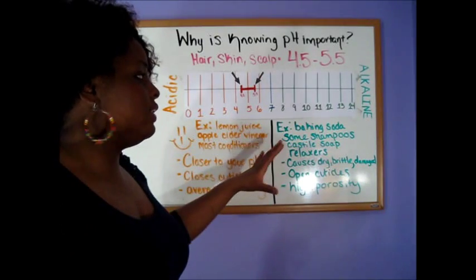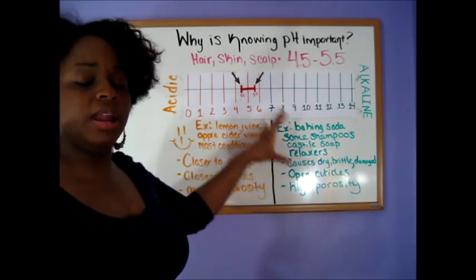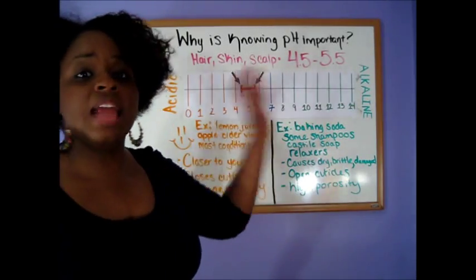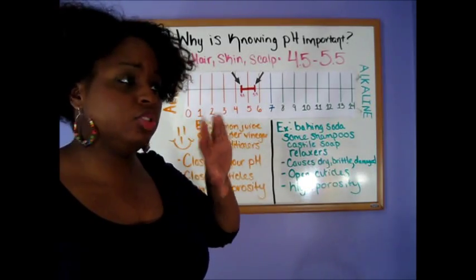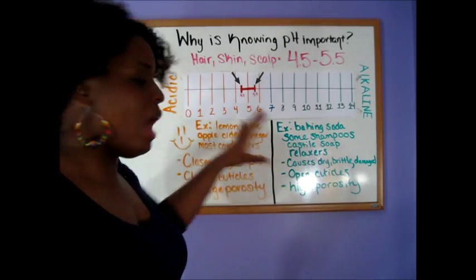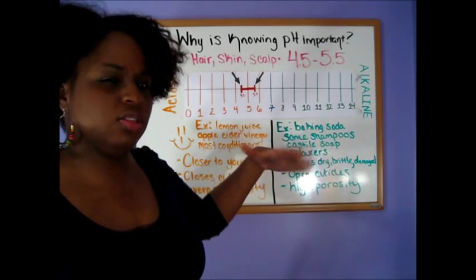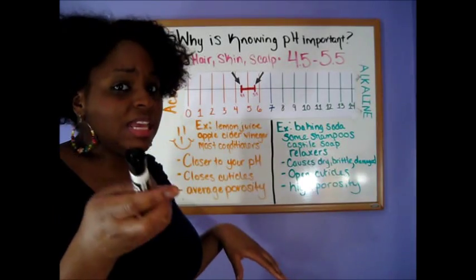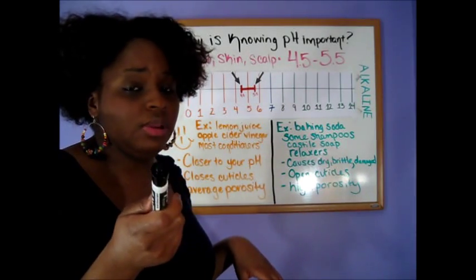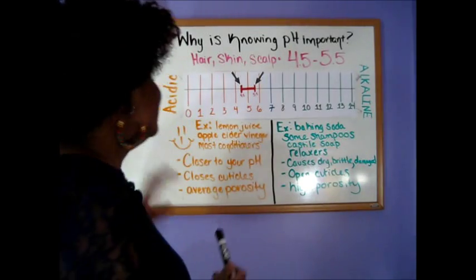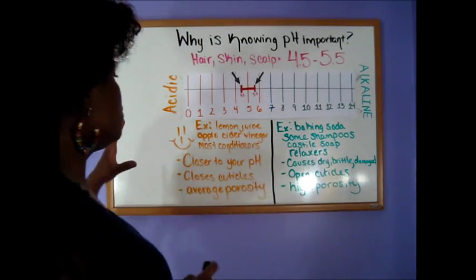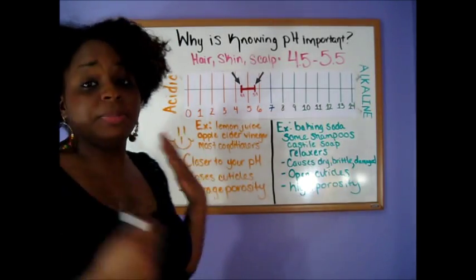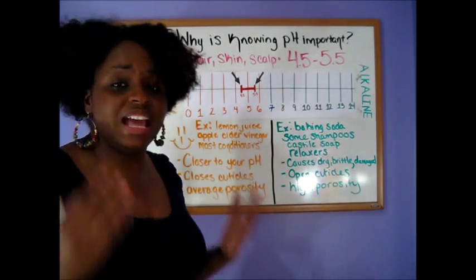And kind of staying away from products that have a high alkalinity, like the baking soda and shampoos and the castile soap. Now I'm going to be creating a video soon about why I think it's okay to use baking soda and all those alkaline solutions, but I don't want to get into that just yet. But those things really should be used in moderation though, even though I say you can use them. When you use an acidic product, it's basically closer to your pH and that's what you want.